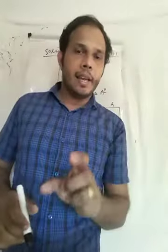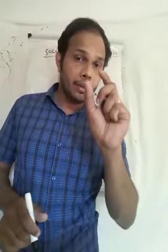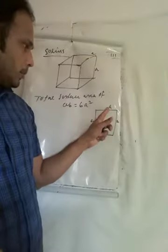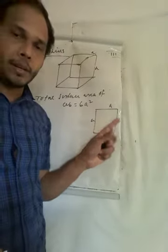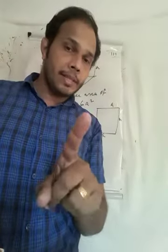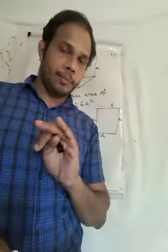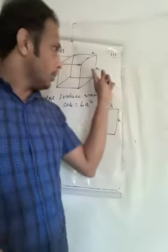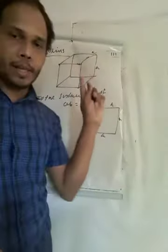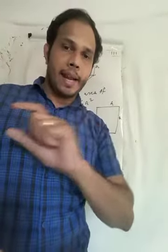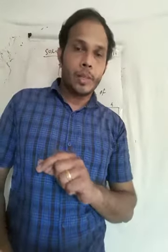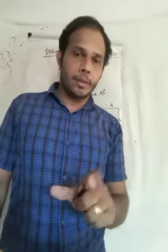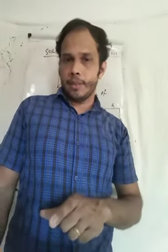What is the area of a square? Side into side. So one face area is a × a, which means a². How many faces are there? Six faces. So a² added six times gives 6a². Therefore the total surface area of a cube equals 6a².